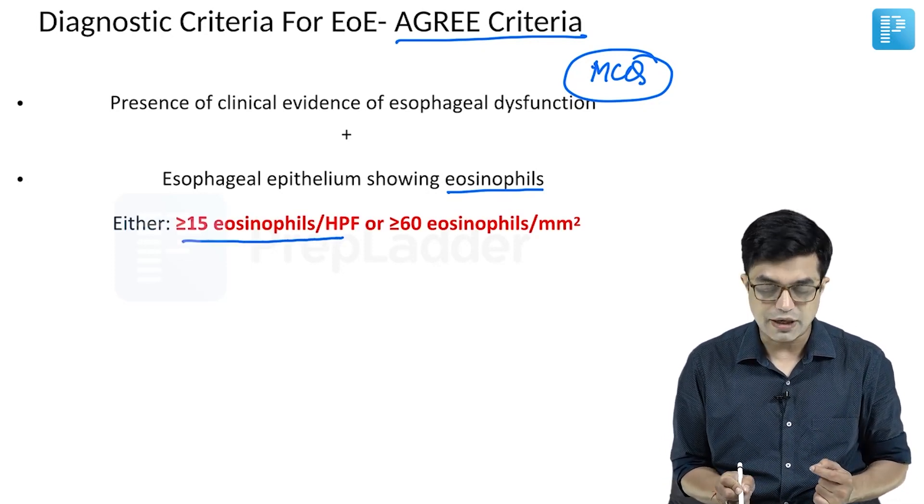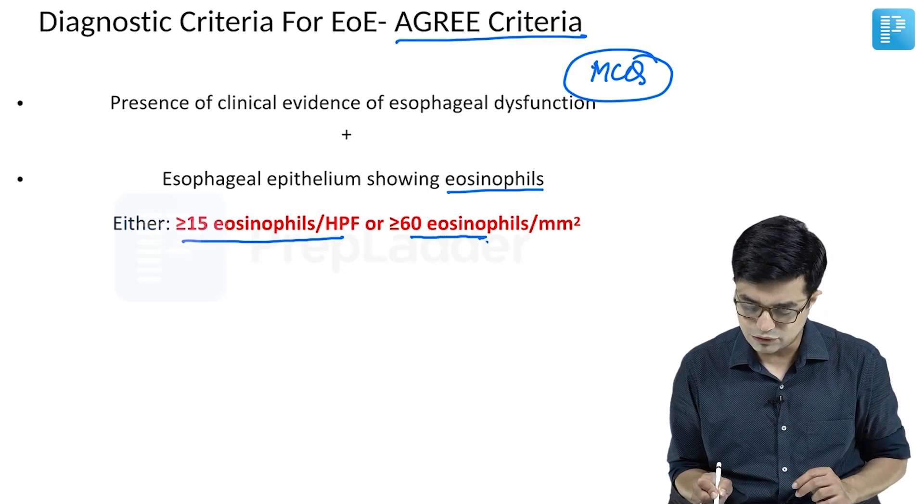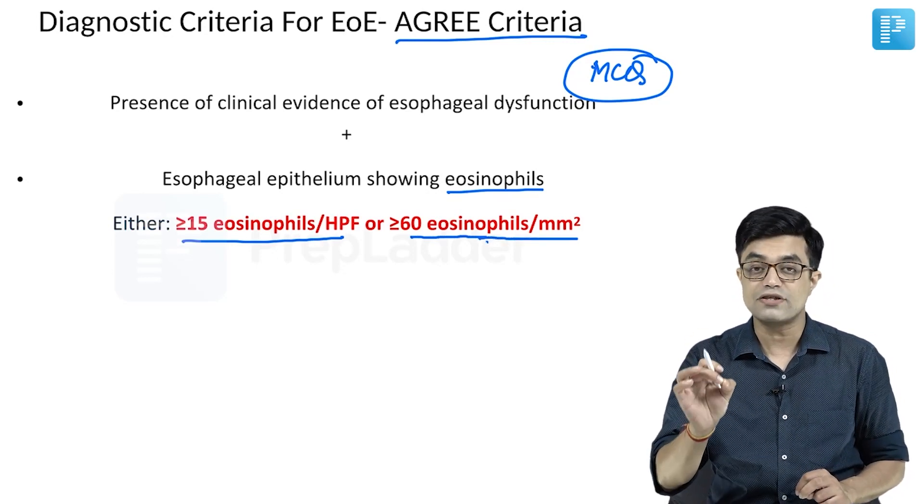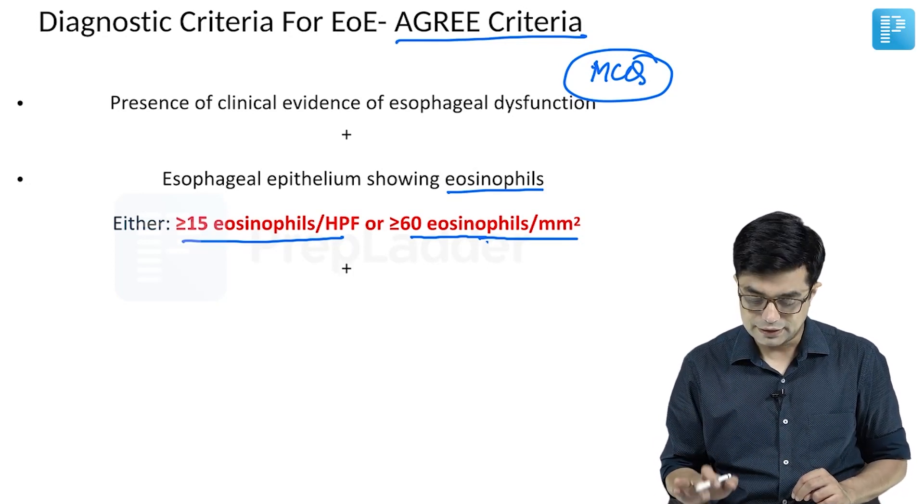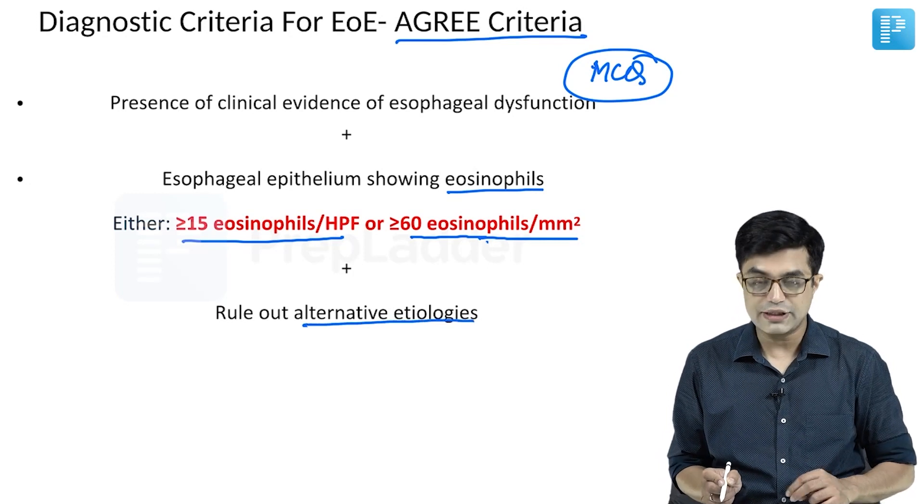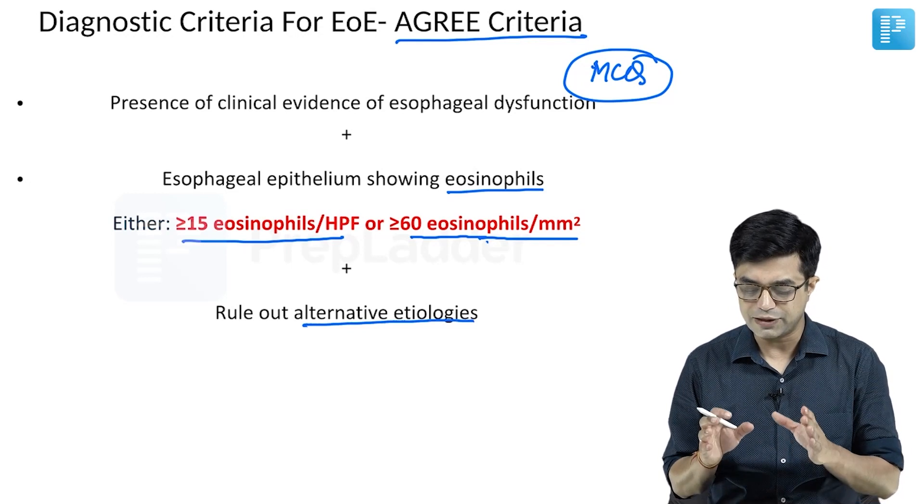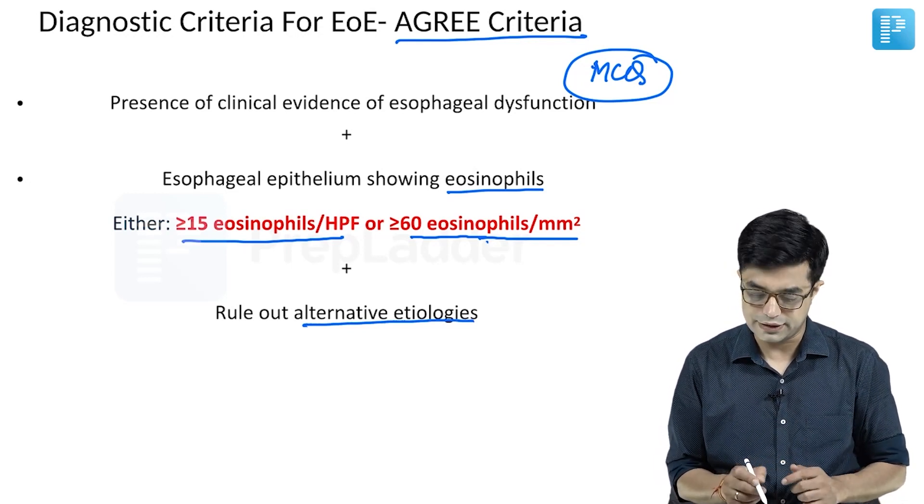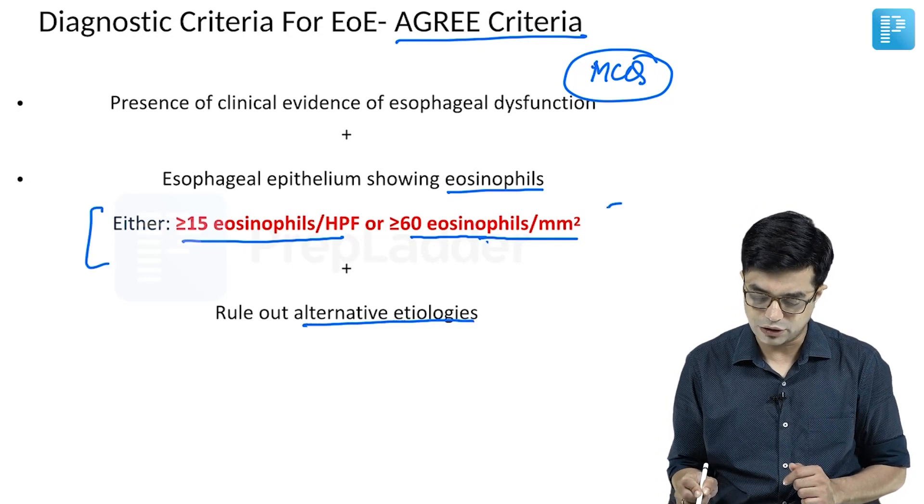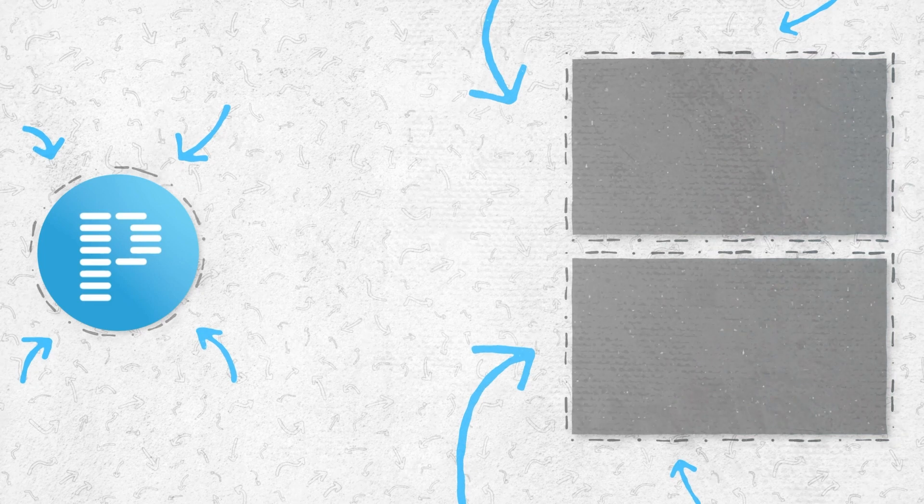Plus, esophageal epithelium should show ≥15 eosinophils per high power field or ≥60 eosinophils per mm² of biopsy specimen. Plus, alternative etiologies including GERD should be ruled out. When all three are fulfilled, the patient has eosinophilic esophagitis. This is a potential MCQ topic.